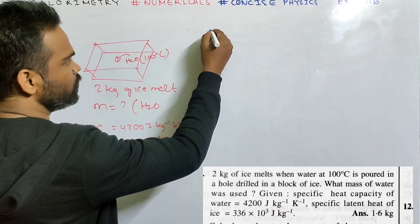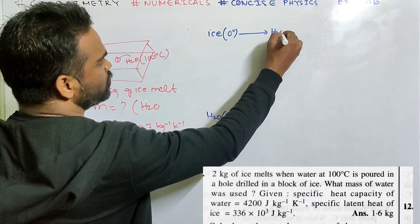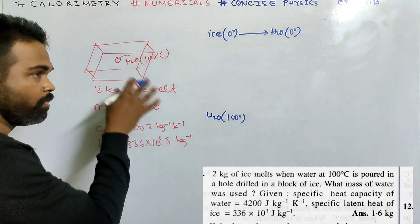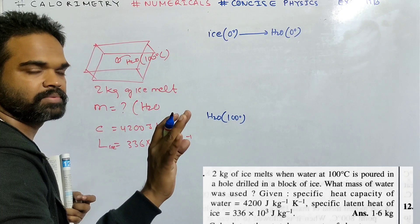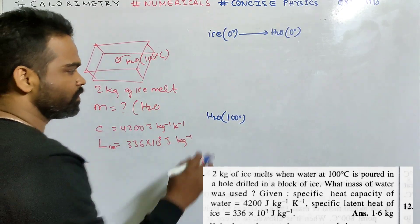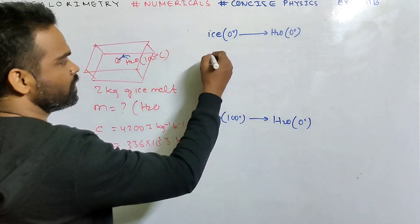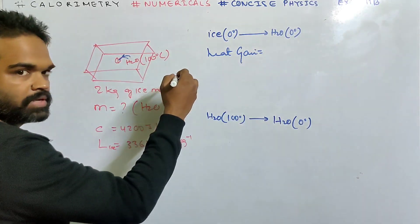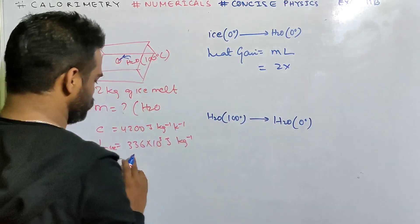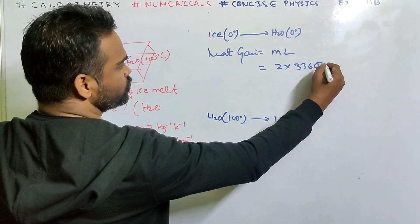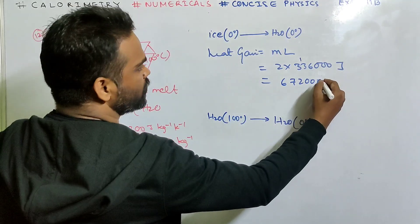Ice was at 0 degree. Only 2 kg of it melts, changing to water at 0°C — this is the heat gained. The heat gained is ML: mass of ice that melts is 2 kg, L = 336 × 10³, so heat gained = 2 × 336,000 = 672,000 joule.